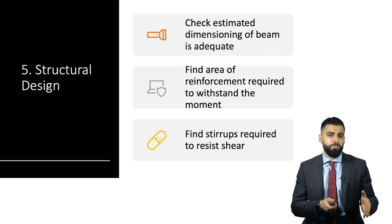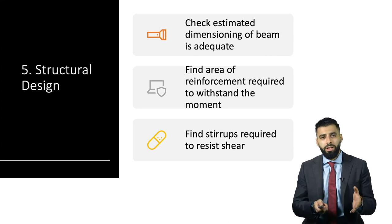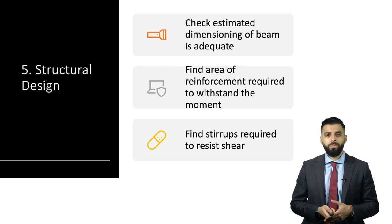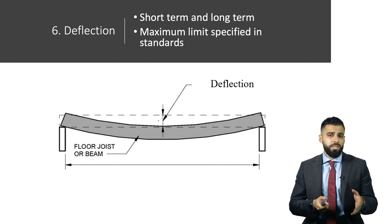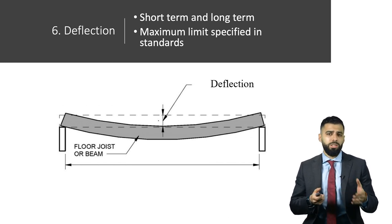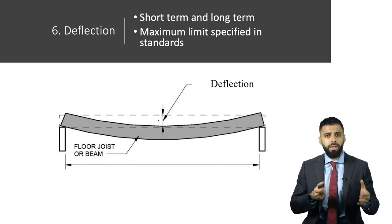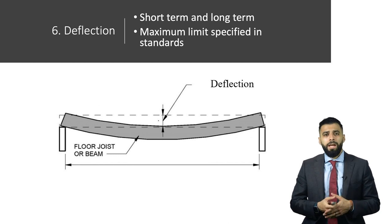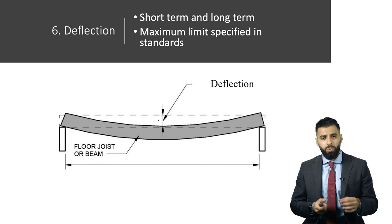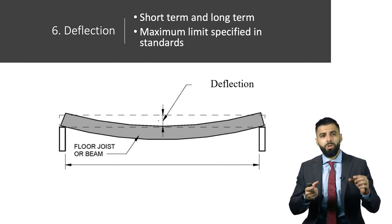When it comes to shear, you consider what quantity of stirrups would be required to resist the shear forces. In step six, the designer looks at deflection and ensures it is within the limits specified in the Australian standards. There is short-term deflection and long-term deflection. Deflection is the distance between the original state of the beam and its state when loaded and bent, as shown in the image.